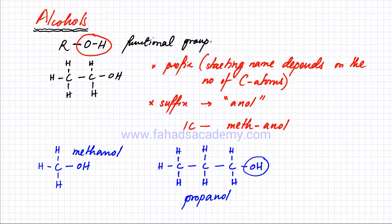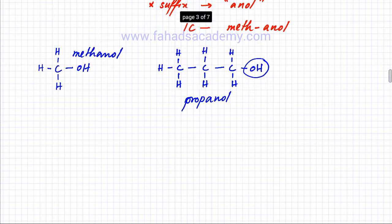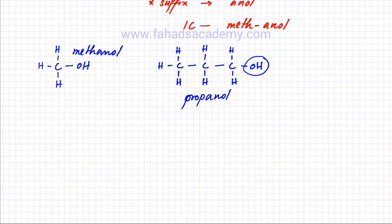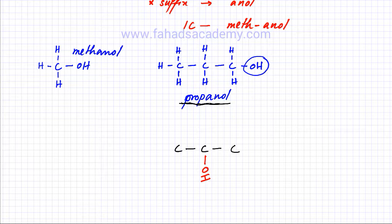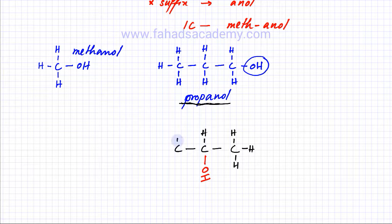There are a few problems encountered when naming alcohols, and one of those is the position of the functional group. That was one example of propanol. The problem is: let's draw another propanol molecule. It's not necessary that the functional group is attached at the very end — it could be in the center as well. So you can have the OH group exactly in the center. Let me draw all the other bonds: this carbon makes four bonds so there would be another hydrogen, and the others also have three more hydrogen atoms each.